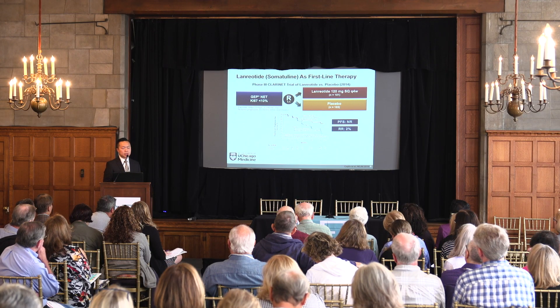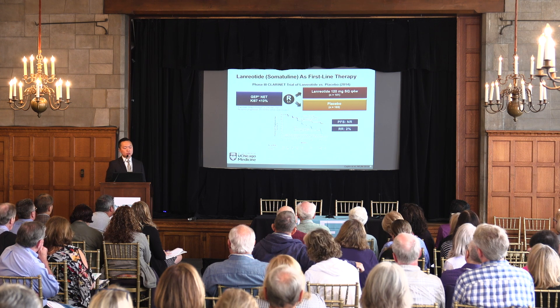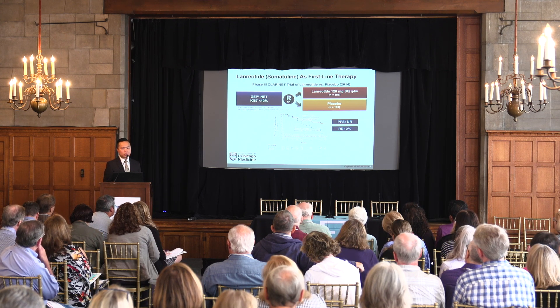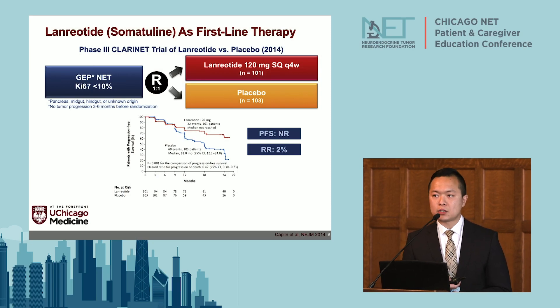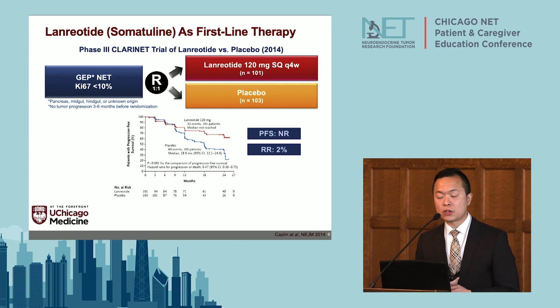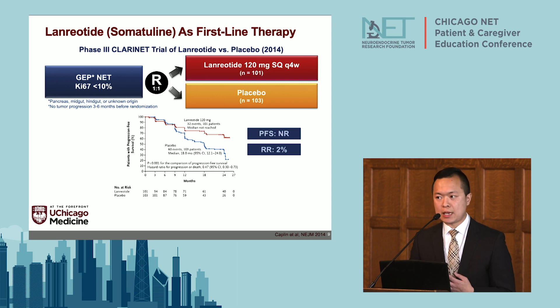Another somatostatin analog we use commonly is called lanreotide, with the commercial name Somatulin. This drug was approved based on the Phase III CLARINET study. The patient population is slightly different — it included all gastrointestinal and pancreatic neuroendocrine tumors with a Ki-67 of less than 10%, and required that patients have stable disease for three to six months prior to enrollment. Patients were randomized to getting lanreotide injections every four weeks by subcutaneous injection versus placebo. Treatment with lanreotide significantly improved progression-free survival compared to the placebo group, though the response rate was again low, meaning this is a drug that mainly keeps the tumor stable rather than shrinking it significantly.